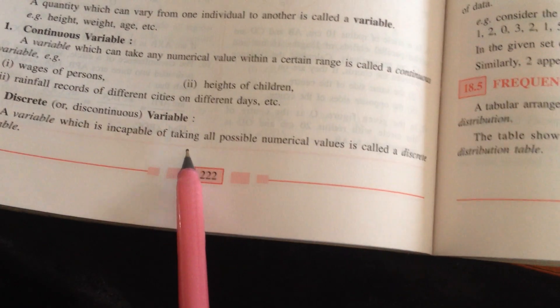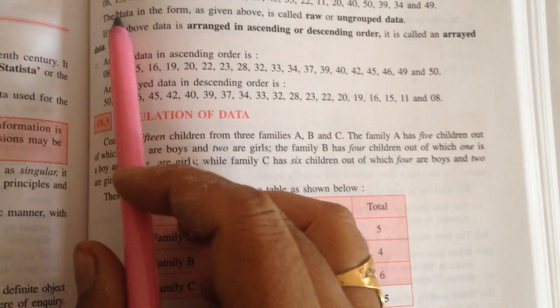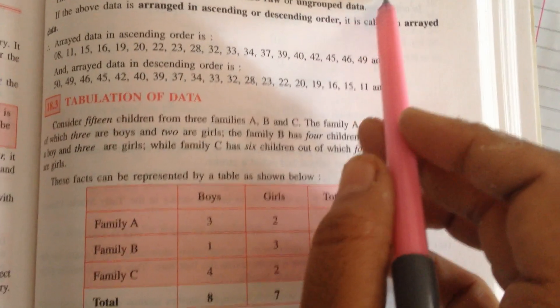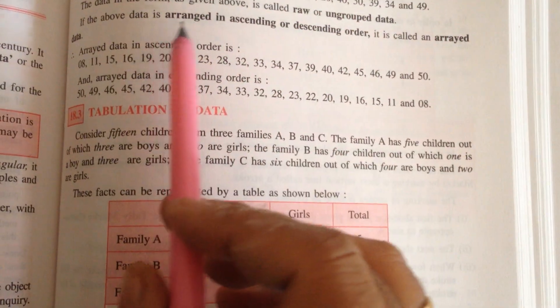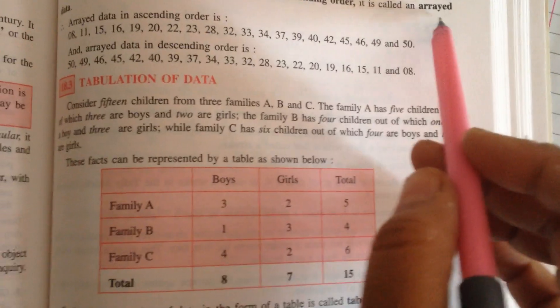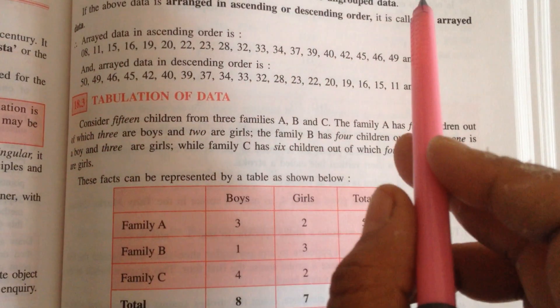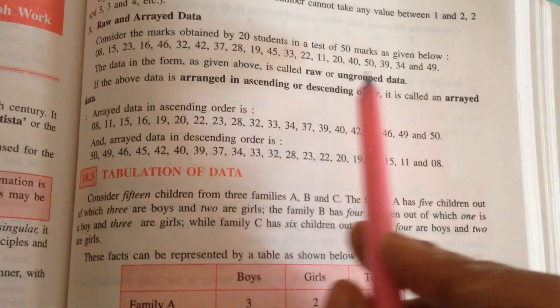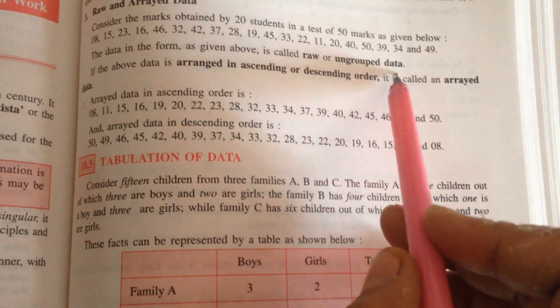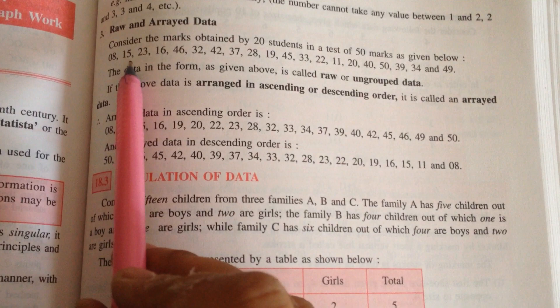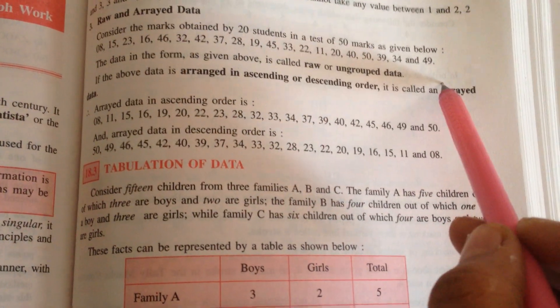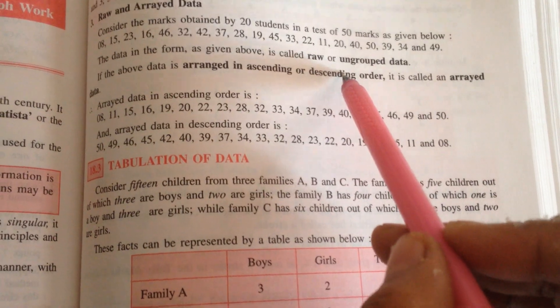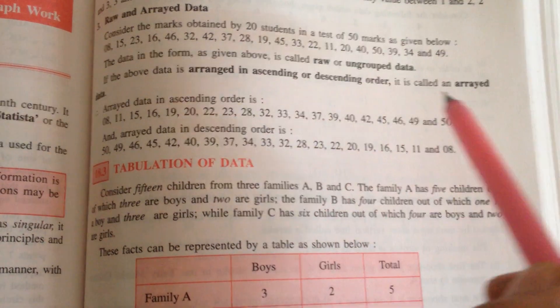Then raw and arrayed data. Suppose these marks are given of 50 students, then we will arrange the data into ascending or descending order. It is called arrayed data, means it is properly arranged. When data is not arranged, something is written anywhere, that is known as raw or ungrouped data. Here 18, 15, 23, any number is written anywhere, so this is known as raw data.